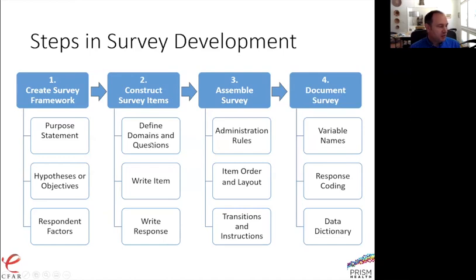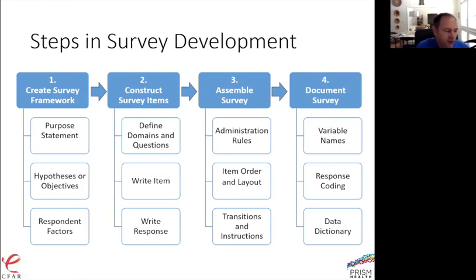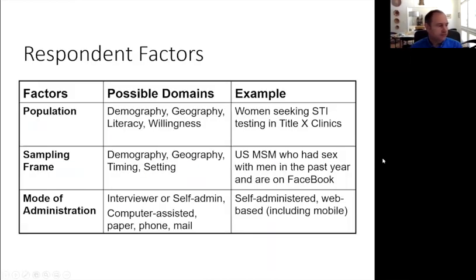Develop survey items, define domains, put questions within them, write items and responses, pilot them with potential participants to see if they're well understood. Then put the survey together: what are the rules about how you'll administer it, the order of items, which should come first, how do you transition between modules. We want to document the survey up front — give it variable names, code how responses will be collected, and develop a data dictionary.